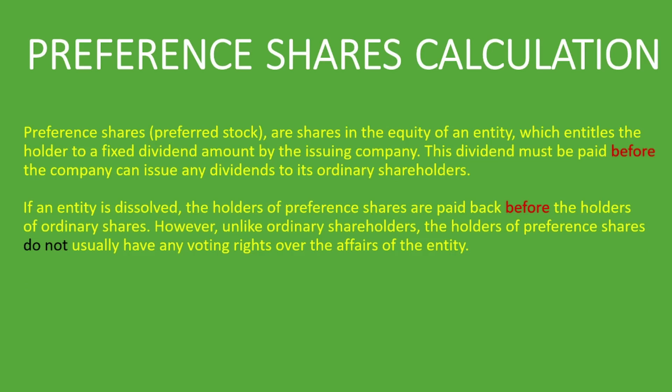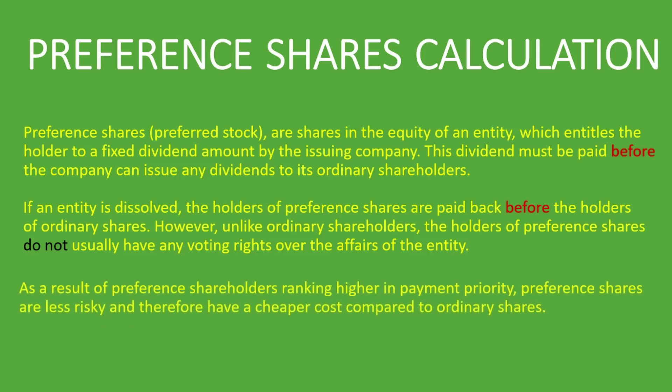Unlike ordinary shareholders, the holders of preference shares do not usually have any voting rights over the affairs of the entity. In short, there is a difference between ordinary and preference shareholders: preference shareholders receive their dividends first, usually every year. Ordinary shareholders do not have to receive dividends every year and may not receive them at all depending on whether the company makes money, but ordinary shareholders do have voting rights.